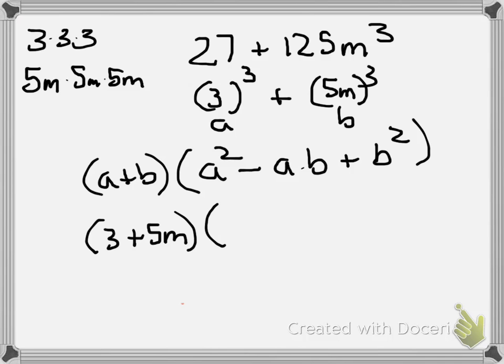So the A is 3, so we square the 3. We subtract 3 times 5m, the A times B, and then we add the entire B squared. You don't just square the m, you square the whole thing.